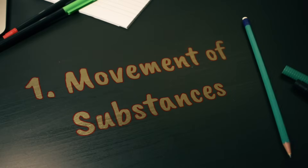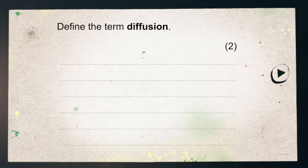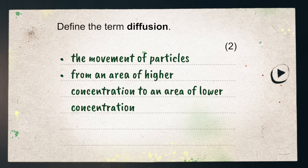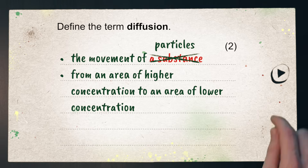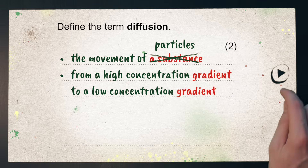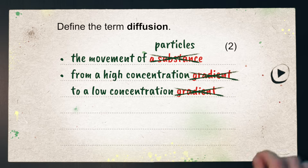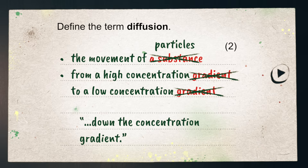First up is the movement of substances. This one comes in three parts and each of them are common in exams. You might be asked to define the term diffusion for two marks. 'The movement of particles' will get you the first mark, and 'from an area of higher concentration to an area of lower concentration' will get you the second. A common mistake is to say 'substance' instead of 'particle' — that will usually lose you the mark. Remember you're stating what moves and from where to where. Another common mistake is to say 'high concentration gradient', which doesn't make sense. You can add 'down the concentration gradient' but that's not essential.